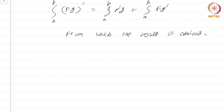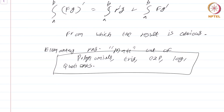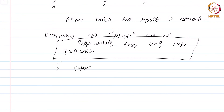But if you just talk about elementary functions — which we will define very soon — these are functions made out of polynomials, trigonometric functions, exponentials, logarithms, and quotients, combined by adding, multiplying, subtracting, and composing. If such a function is continuous on a closed interval [a,b], there is no guarantee that its anti-derivative is also going to be an elementary function.